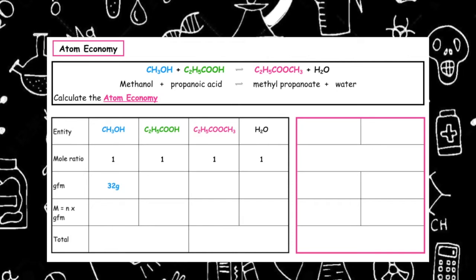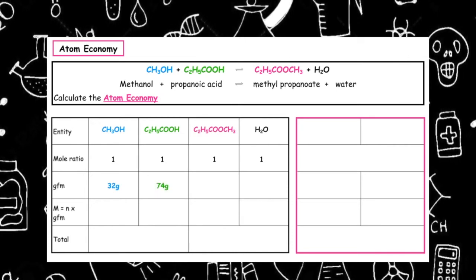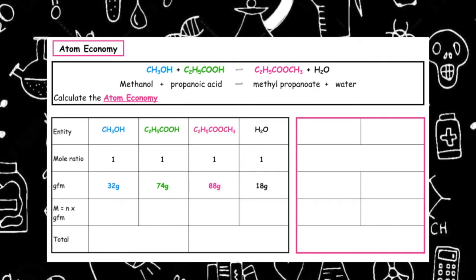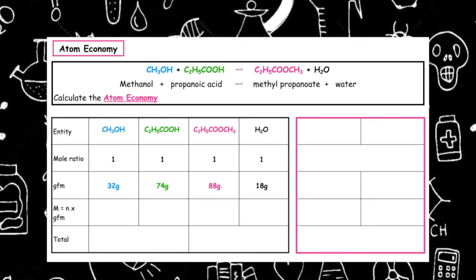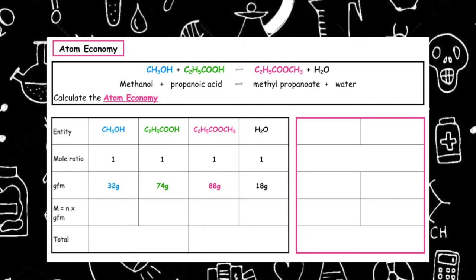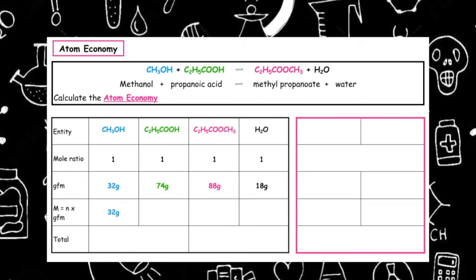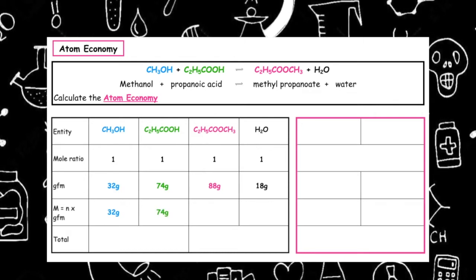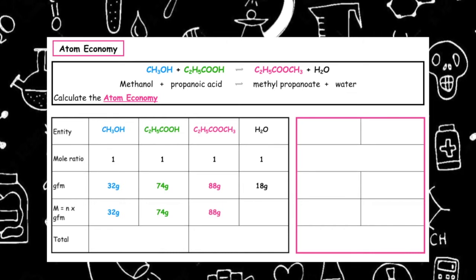We then, if we're given a formula, can calculate the gfm of each entity. Methanol has a gfm of 32, propanoic acid is 74, methyl propanoate is 88, and water is 18. What we can now calculate is the mass. Mass is equal to number of moles times gfm, so we'll have 1 times 32 which gives us 32, 1 times 74 which gives us 74, 1 times 88 which gives us 88, and 1 times 18 which gives us 18.